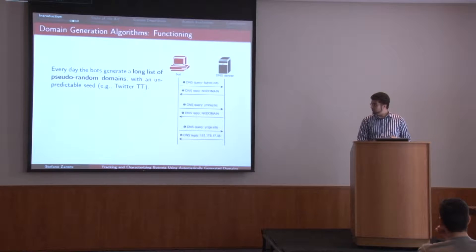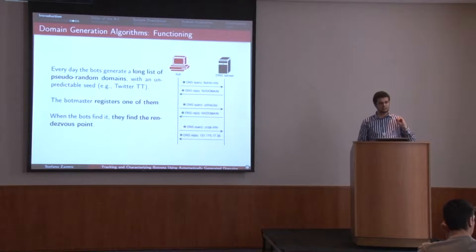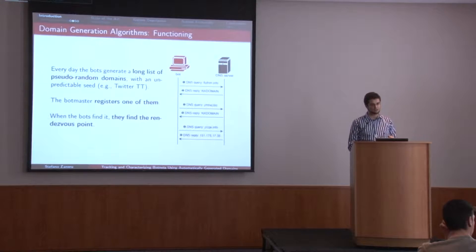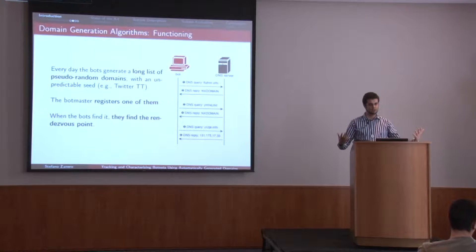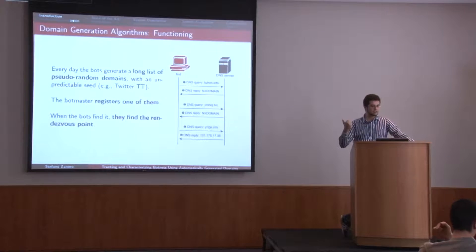If you think about it, this is basically a very good strategy for the attacker. They have 50,000 domains to choose from. If I take away one, they can either wait for the next day where another list will be generated, or they can just register one of the other 50,000. The machines will automatically cycle to try at least and reach the new command and control even that same day.